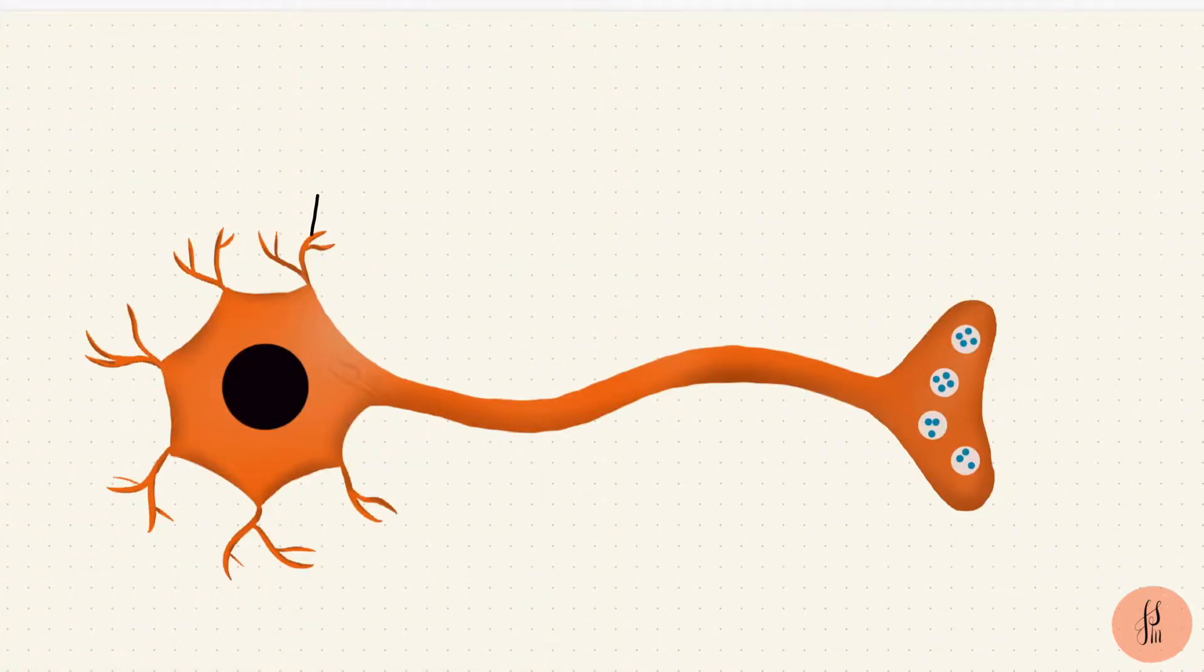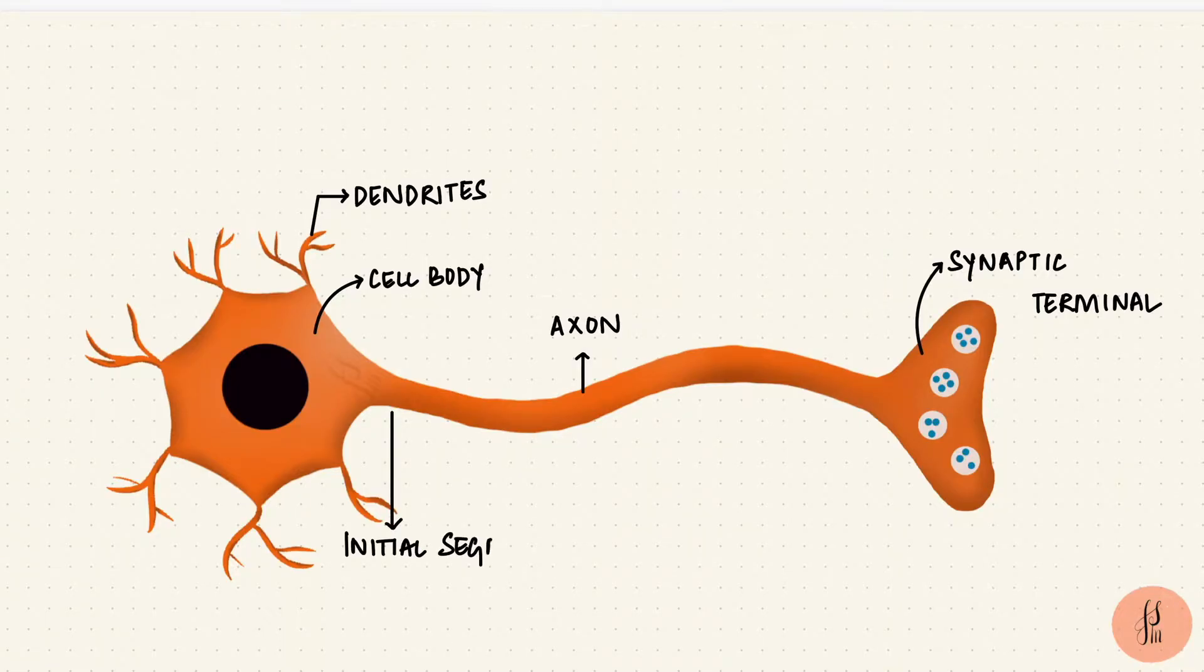So we're going to use this schematic neuron. It has dendrites, a cell body, the axon, and one representative synaptic terminal. The initial segment is the first portion of the axon. This is usually where the action potentials start, because this area has the highest density of voltage-gated sodium channels, and we already saw how important those are.